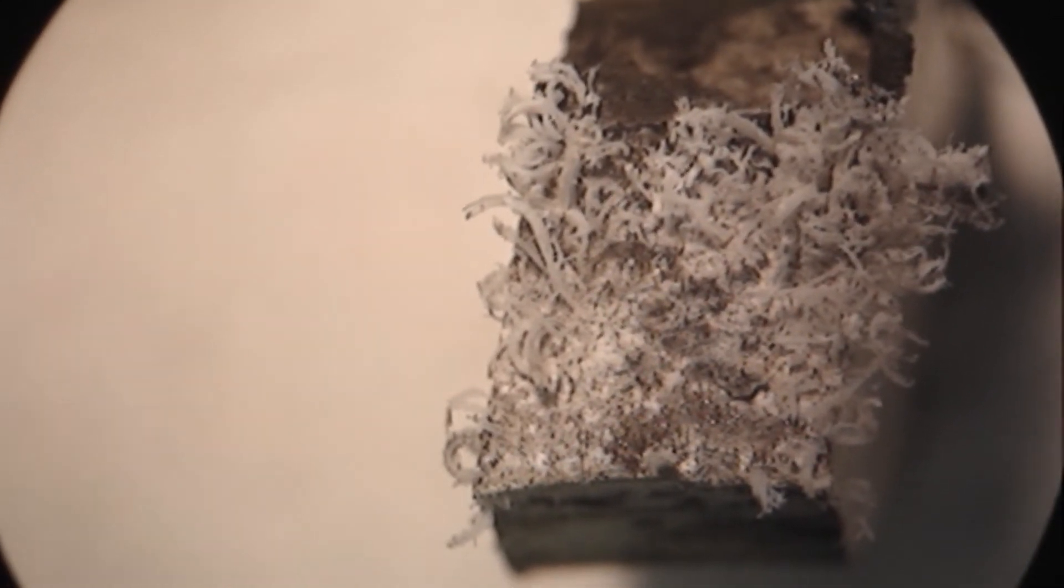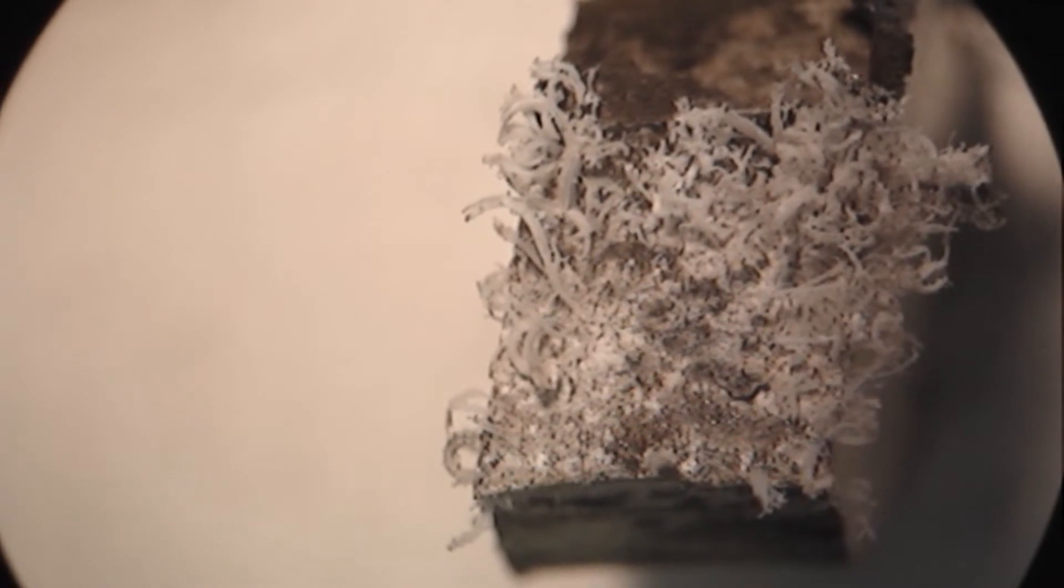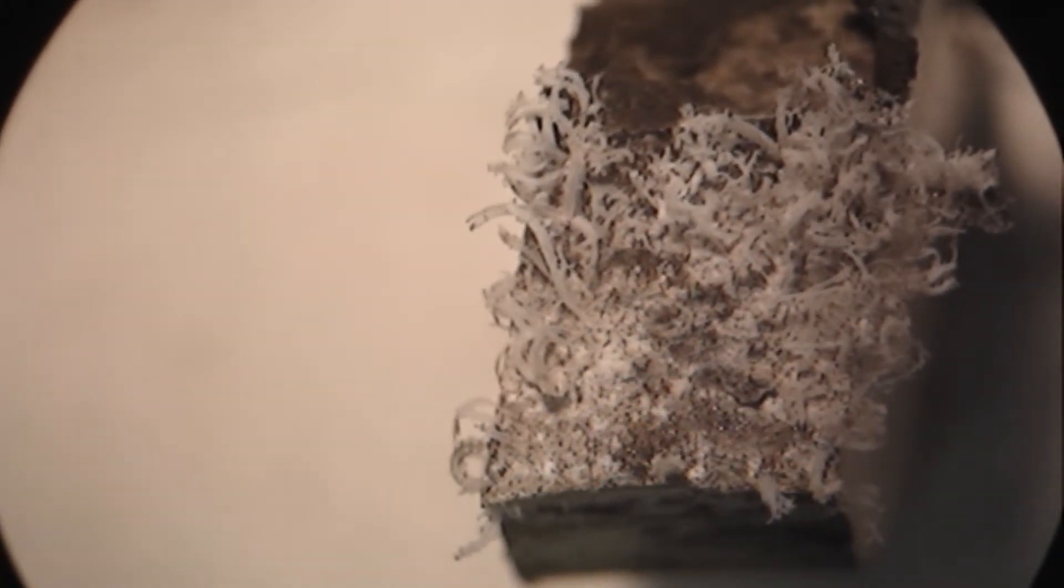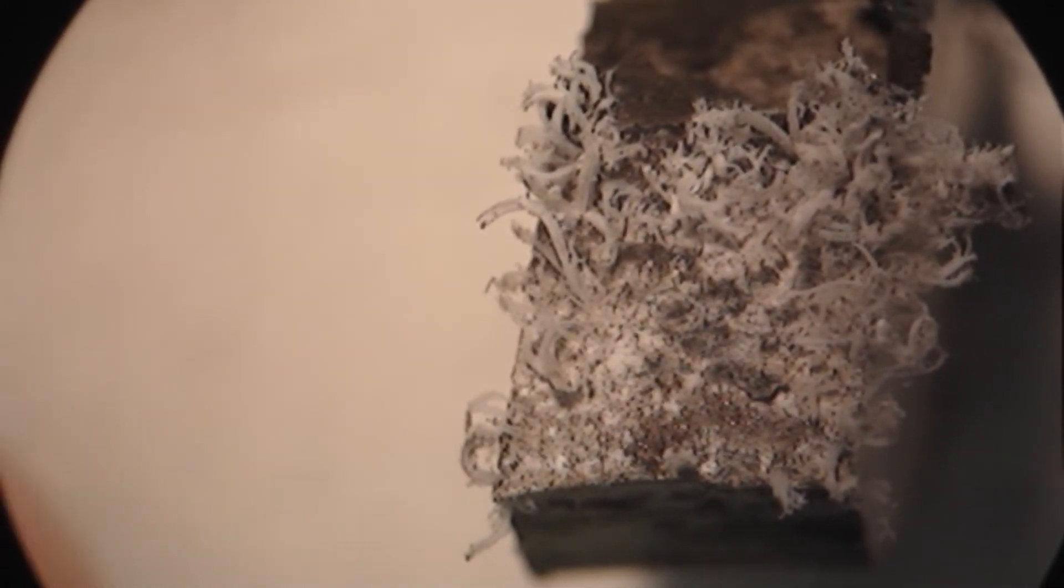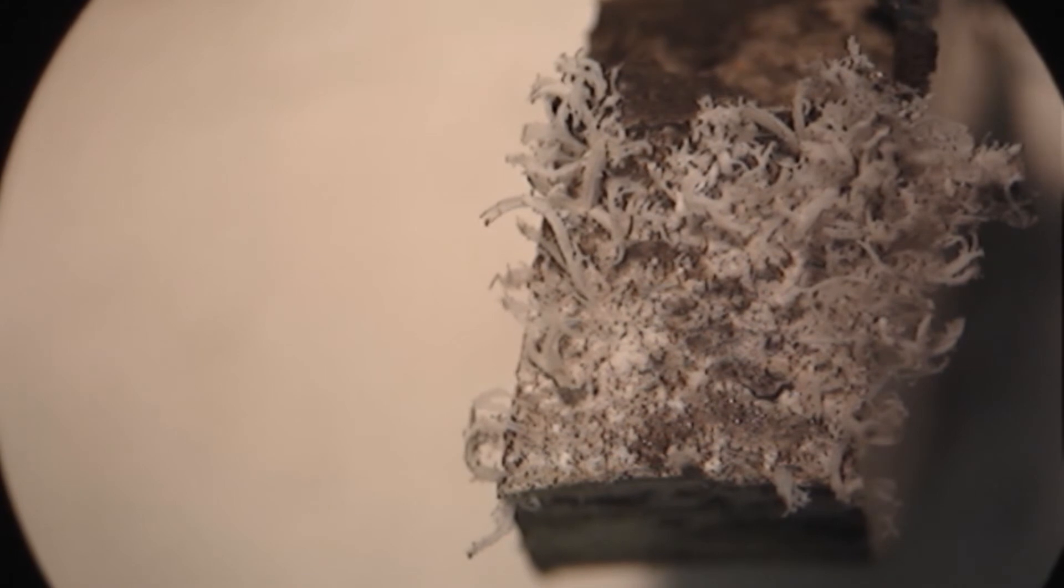Unusually the filiform corrosion is producing filaments coming off the surface. This is probably because there are tiny droplets of mercury causing the corrosion to take place and the corrosion product is forming right around the droplets as a ring.